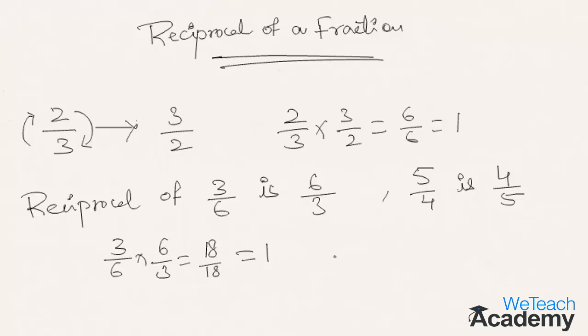In the third example, 5 by 4 multiplied by its own reciprocal, that is 4 by 5. We get 5 times 4 is 20 by 4 times 5 is 20, which is nothing but 1 again.